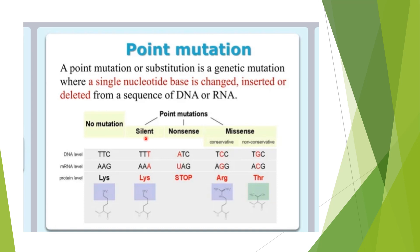In silent mutation, consider the example where the DNA sequence is thymine-thymine-cytosine (TTC). The cytosine is replaced by thymine, so TTC is changed to TTT. The messenger RNA formed from this is AAA. However, it does not have any significant change in the phenotype — the amino acid formed is again lysine. Therefore it is called silent, meaning it has no effect on the phenotype. This may be due to the fact that there are different codons that code for the same amino acid.